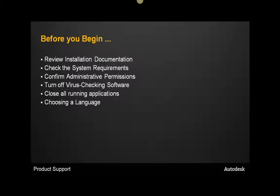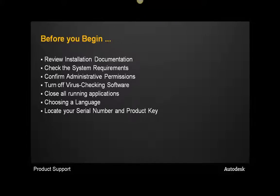If you intend to install your product with any kind of language pack or country kit, make sure you download it prior to installation. Don't wait until you reach that page in the installation wizard — download it first and have it available locally on your machine. Finally, make sure you have the serial number and product key available prior to installation. There are several places this information can be found.